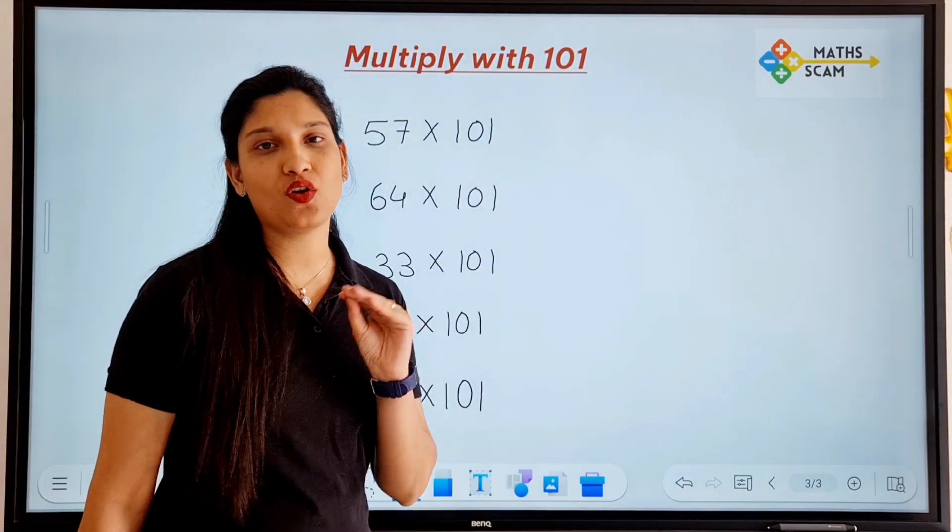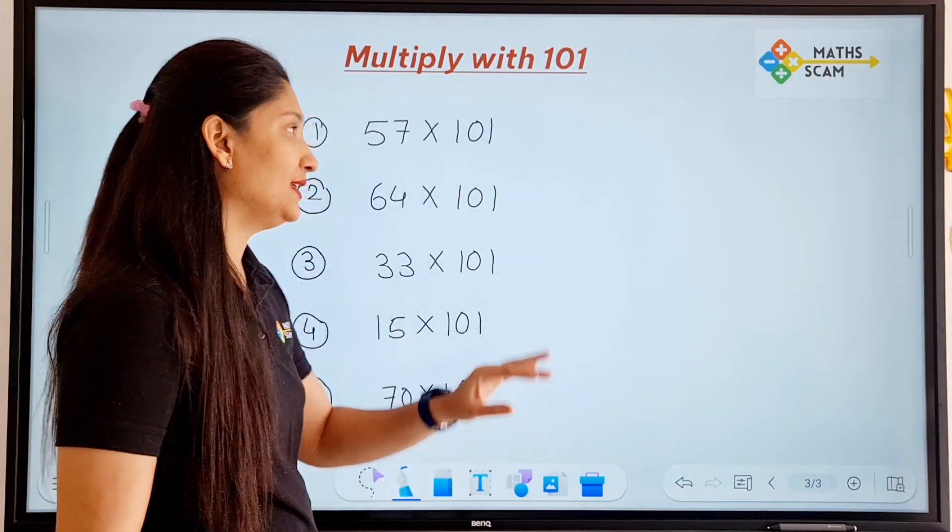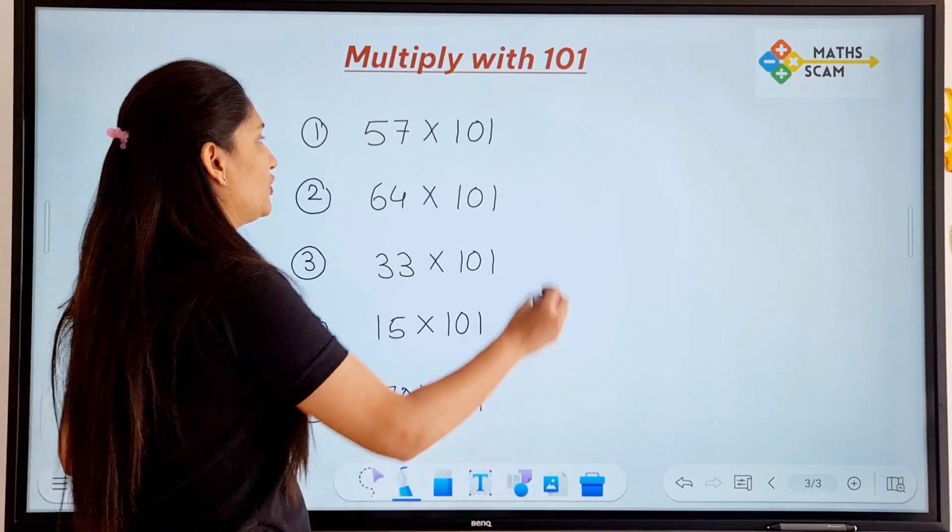It's the easiest trick of Vedic Maths you will ever see. The multiplier is 101. So, what you have to do is,